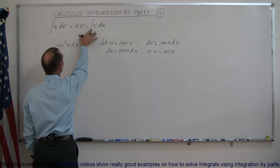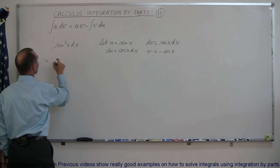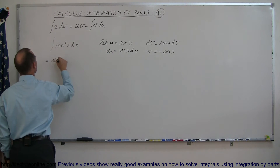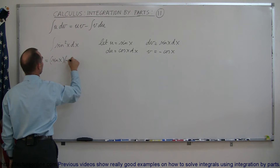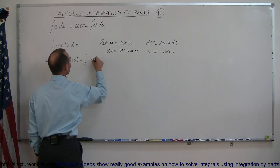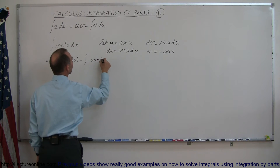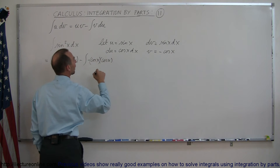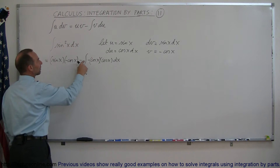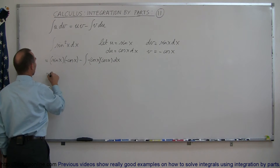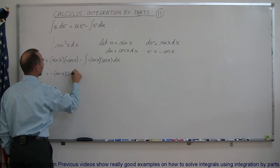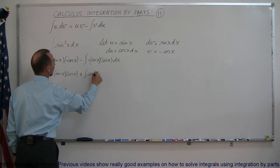Now let's substitute that back into the formula for integration by parts. Our integral is equal to u times v, which is sine of x times negative cosine of x, minus the integral of v du. Here v is minus the cosine of x and du is cosine of x dx. Multiplying the two negatives and writing this as cosine squared, we end up with negative sine of x times cosine of x plus the integral of cosine squared of x dx.